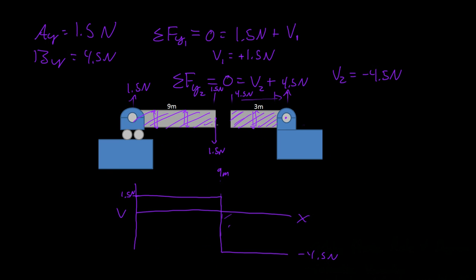Now if we wanted to find the moment at this point, pretending that this did not exist, what moment would this have to generate to prevent this force from making it rotate that way? It would be the opposite of this moment, and this is counterclockwise, so it would be positive. So what's the length times the force? The length X times the force, which is the shear force V, which is equal to 9 meters times 1.5 Newtons, and that is just equal to 13.5 Newton meters.